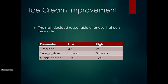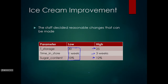They look at some reasonable changes and say: the low parameters are what they consider to be the bad-quality situations, and the high parameters are what they assume will improve quality — though that may not necessarily be the case. They assume that lowering the storage temperature should improve quality, that allowing more time in storage might improve quality, and that raising the sugar content may help reduce ice crystals and improve the ice cream.